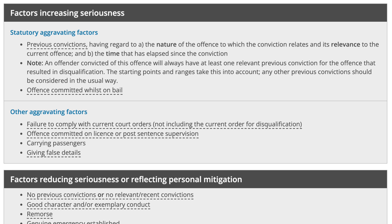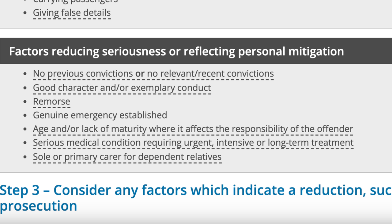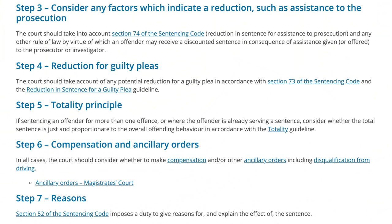Factors that increase seriousness include previous convictions, having regard to their nature and relevance to the current offence, and the time elapsed since that conviction. Factors that may reduce seriousness include no previous or recent convictions, good character, exemplary conduct, and remorse. The court will also consider whether the defendant has assisted the prosecution, apply a reduction for a guilty plea, and then apply the totality principle — relevant where multiple offences are sentenced at the same time — before considering ancillary orders such as compensation or further disqualification.